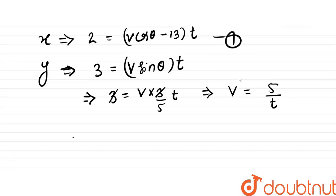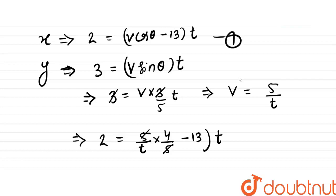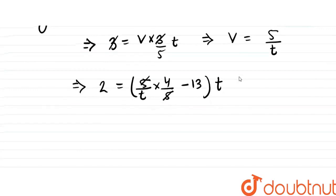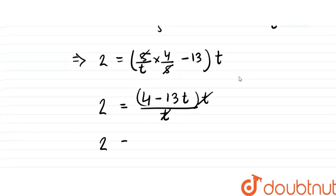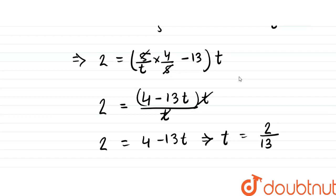Now substituting V = 5/t into the first equation: 2 equals V cos theta minus 13, times t. Using cos theta = 4/5, this becomes 2 equals 4/t times t minus 30t, which simplifies to 2 equals 4 minus 30t, so t equals 2 by 13 seconds.